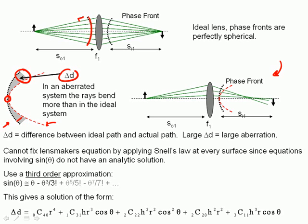However, there is an analytic solution if you use a third-order approximation as shown right here. Remember that the sine of theta can be given as theta minus theta cubed over 3 factorial plus theta to the fifth over 5 factorial and so on.